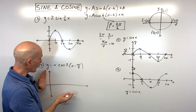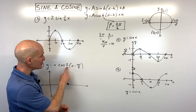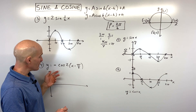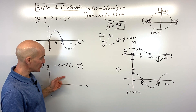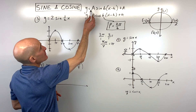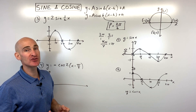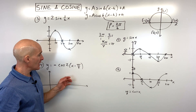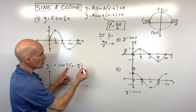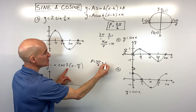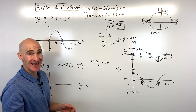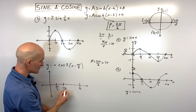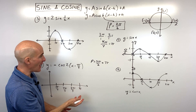Let's look at example four: y = −cos(2(x − π/4)). The negative makes all y-values the opposite sign, reflecting the graph over the x-axis. Note that amplitude is always positive, so the amplitude here is one — the negative just reflects it. For the period, we use 2π divided by b where b = 2, giving a period of π. Dividing by four gives the scale: π/4, π/2, 3π/4, and π. We're always dividing up into fours.